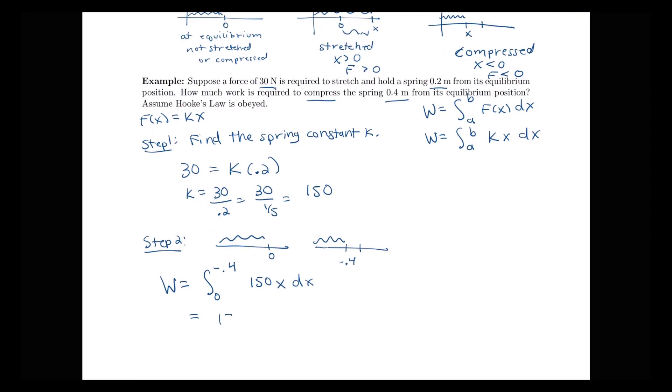So what does that give us here? We'll have 150x squared over 2 evaluated from 0 to negative 0.4. So this will be 75 times negative 0.4 squared minus 0 squared.